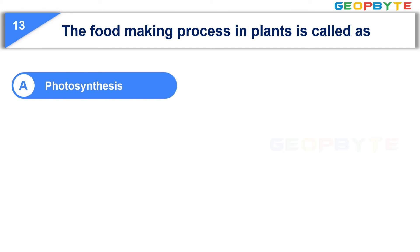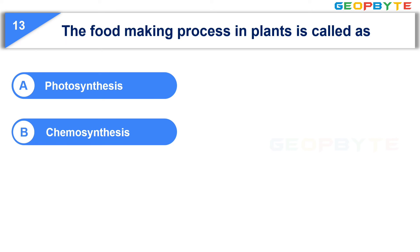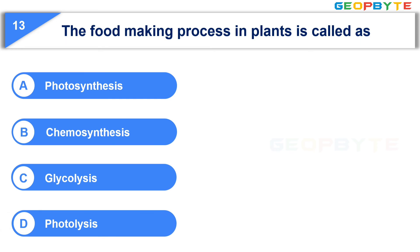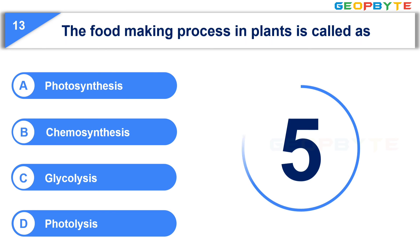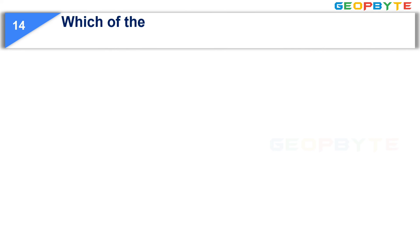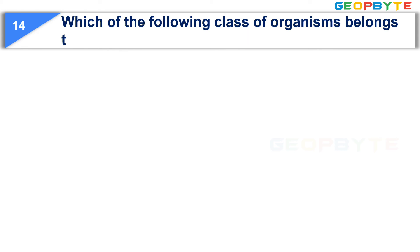The thirteenth question is: The food-making process in plants is called — Option A: Photosynthesis. Option B: Chemosynthesis. Option C: Glycolysis. Option D: Photolysis. Your time starts now. Your time is up and the correct answer is Option A: Photosynthesis.